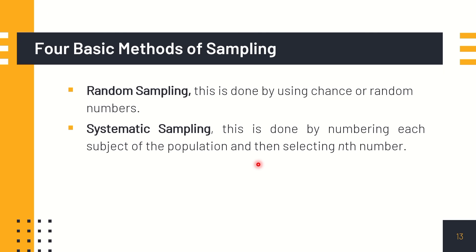Systematic sampling is done by numbering each subject of the population and then selecting nth number. For example, in one community, let's say you arrange by numbers one community. Let's say it has 1,000 population. And then, you only get respondents every 10th number from the population of that community. So you only get every 10th, 20th, 30th.